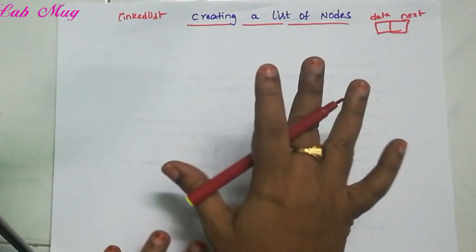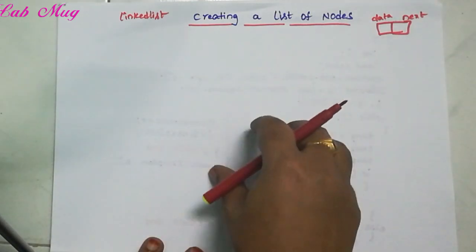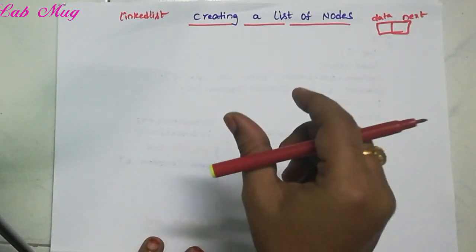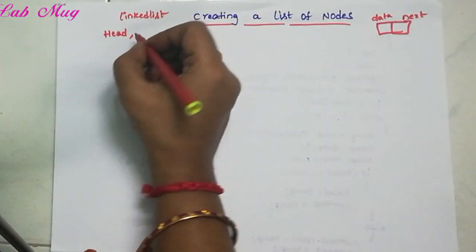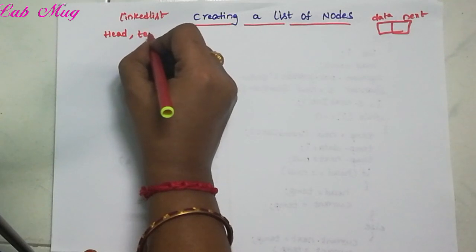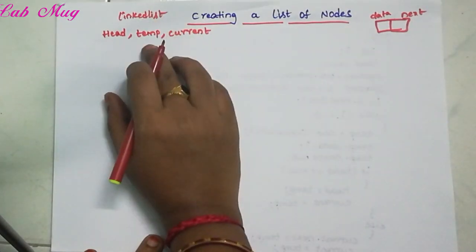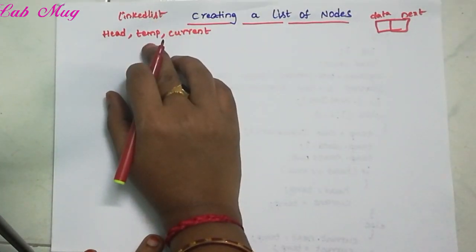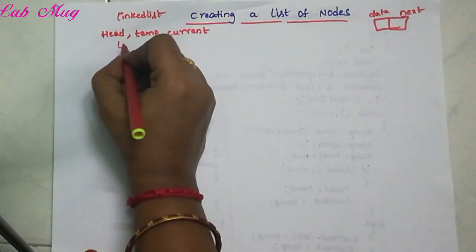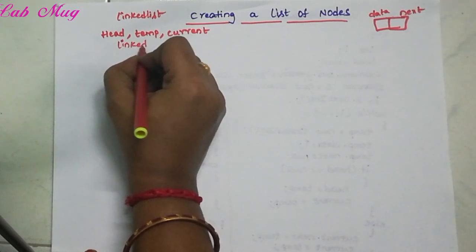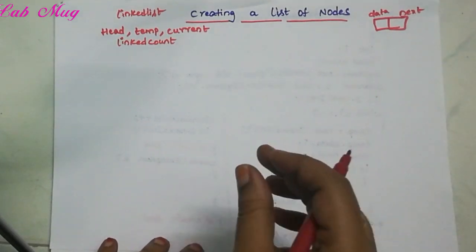To implement the linked list, we create three elements in the main class: a head pointer, a temp pointer, and a current pointer. So we declare three pointer variables — head, temp, and current. We also have a variable called linkedCount.